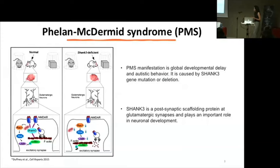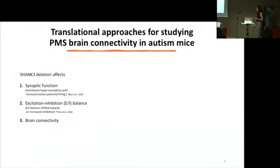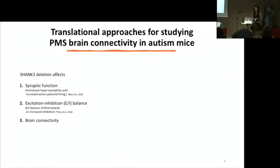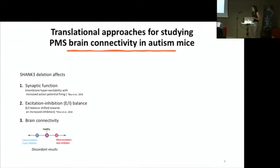To deeply understand the mechanism of alteration in neuronal connectivity in PMS, different transgenic mouse lines were developed. Thanks to these useful autism models, it has been possible to show that SHANK3 deletion affects synaptic function — there is hyperexcitability of the membrane and an altered excitatory-inhibitory balance. But how PMS affects brain connectivity is still an open question, because imaging studies conducted so far have produced discordant results, and we still don't know whether this pathology induces hyper- or hypoconnectivity at the cortical level.